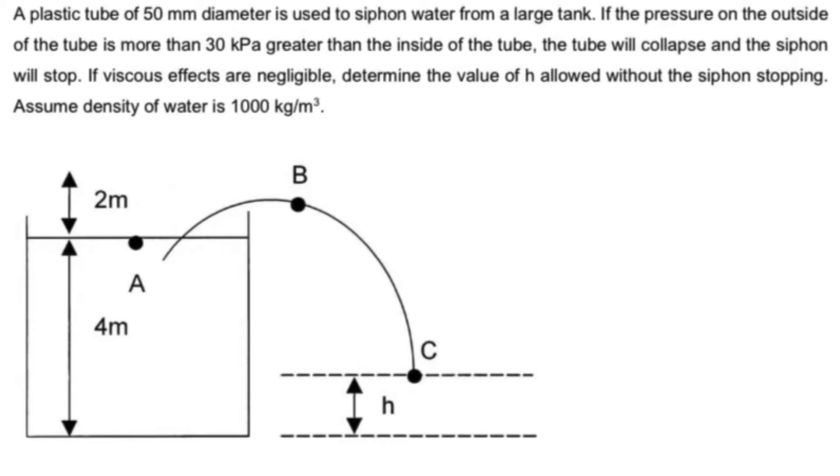So the first thing I am going to do for myself, looking at this diagram, I am going to write down the Bernoulli's equation. And also, I am going to take the point A as the reference point. So looking only at point B and C, this will be my equation.